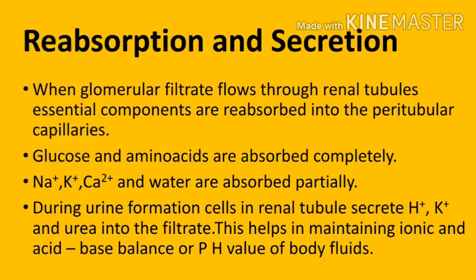Sodium, potassium, and calcium ions and water are absorbed partially. The excess components that are retained in the blood even after ultrafiltration are secreted to the renal tubules from the peritubular capillaries. During urine formation, the cells in the renal tubule secrete hydrogen and potassium ions and urea into the filtrate. This helps in maintaining ionic and acid-base balance, or the pH value, of body fluids.